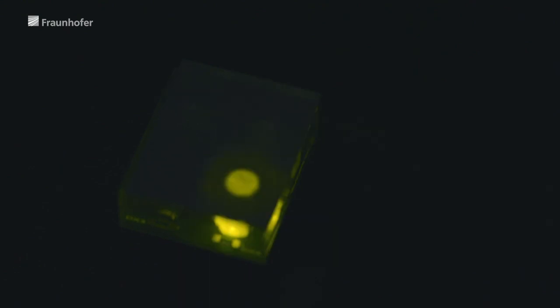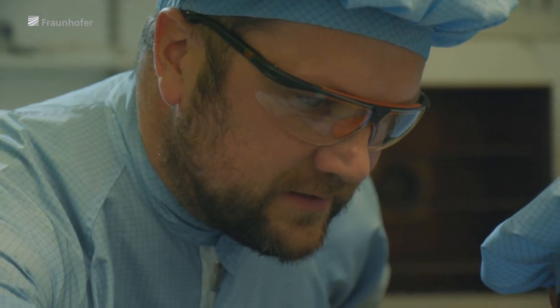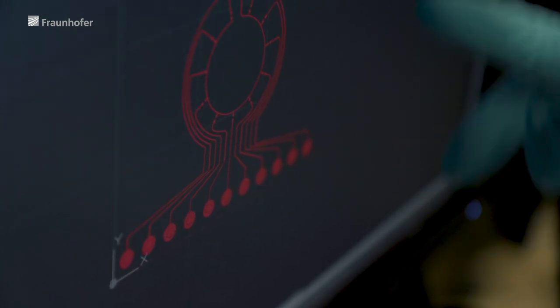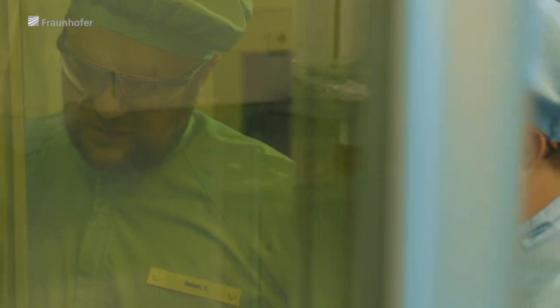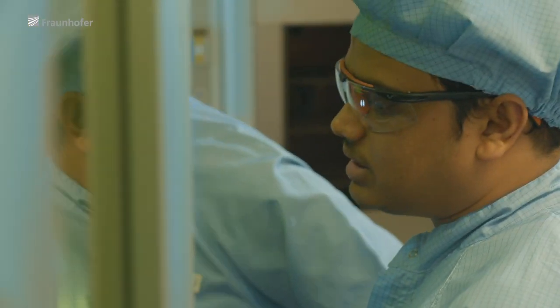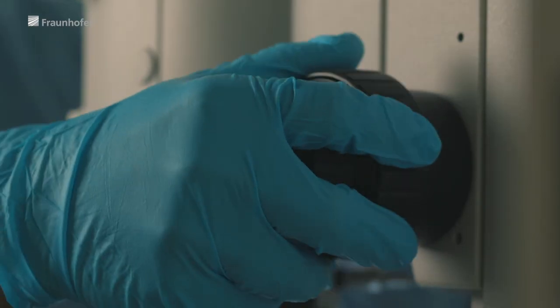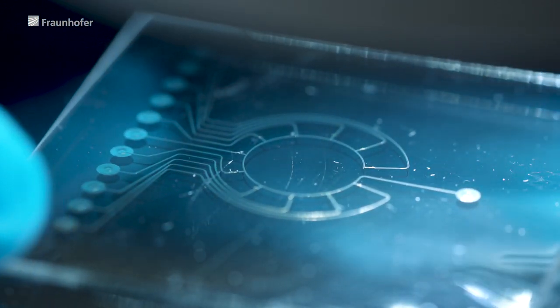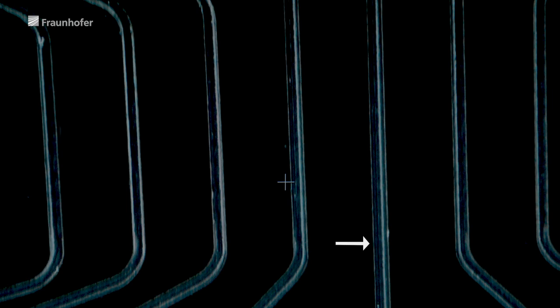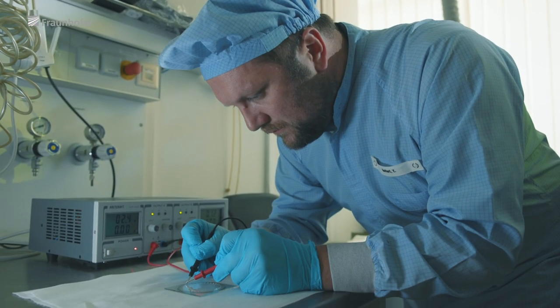When particularly small and slim conductor paths have to be printed into optical objects, a further digital printing process, so-called aerosol jet printing, is used. Scientists at Fraunhofer INAS and IFAM have advanced the technology for this application. After the conductor paths have been manufactured, very small light emitting diodes are placed using a pick and place process and thus hybrid integrated.